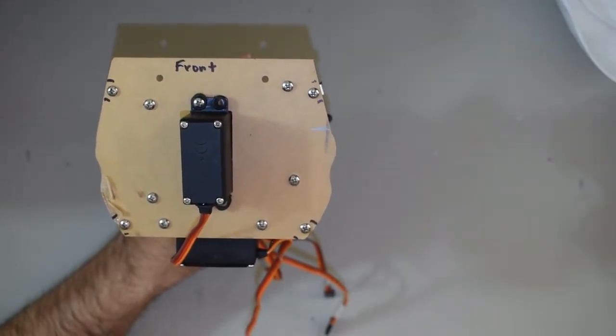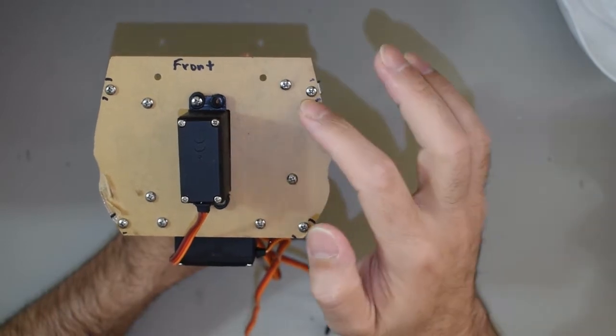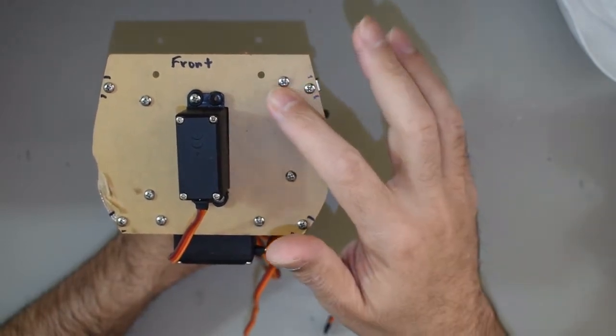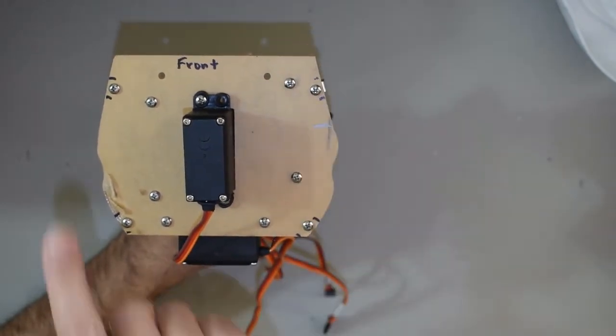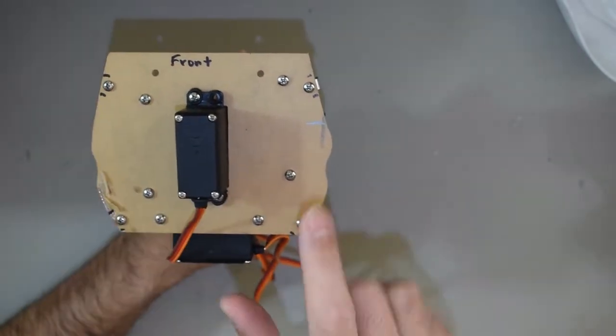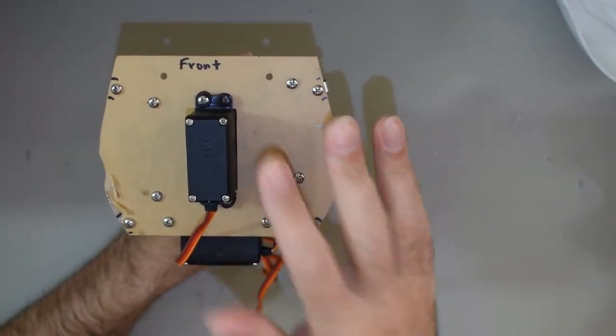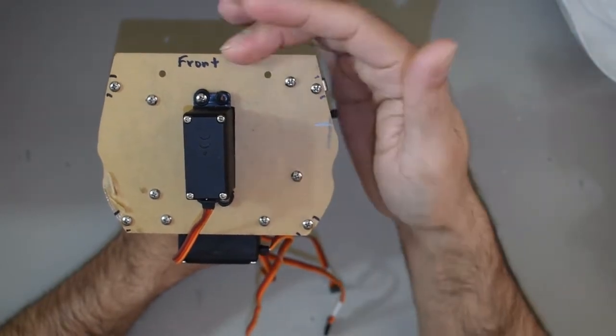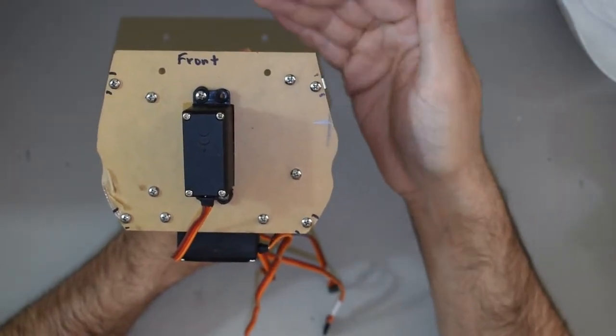You can usually tell the difference based on the hole positioning. You can see these three holes here are lined up this way. There's three like this, so that way you know that you're facing this plate up in the right way and that this is the front and it's facing in the right direction.